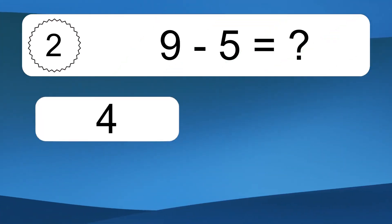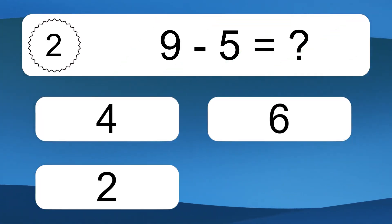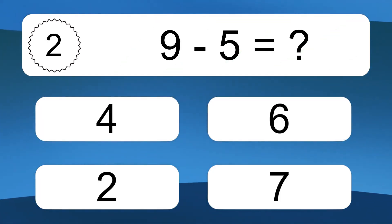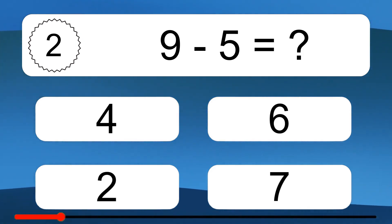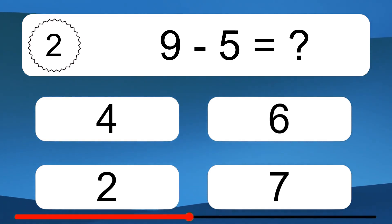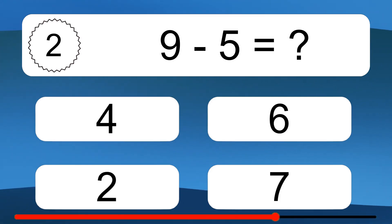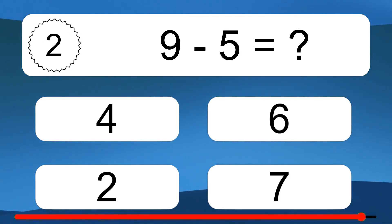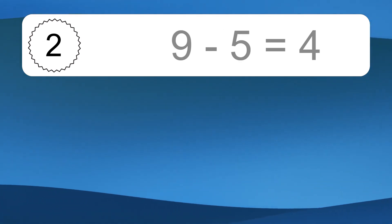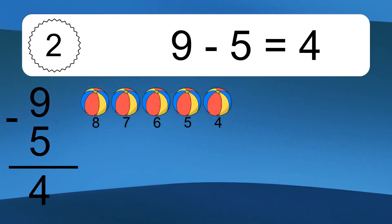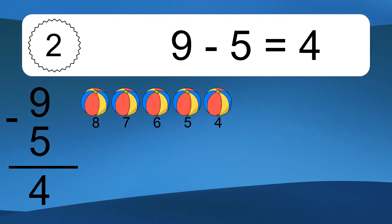9 minus 5 equals what? 9 minus 5 equals 4.